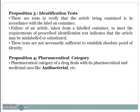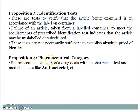Proposition 3 — identification tests: these are tests to verify that the article being examined is in accordance with the label on the container. Failure of an article to meet the prescribed identification test indicates the article may be mislabeled or substituted; these tests are not necessarily sufficient to establish absolute proof of identity. Proposition 4 — pharmaceutical category: deals with pharmaceutical and medicinal uses, like antibacterial.